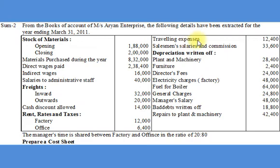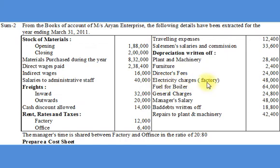Travelling Expenses Rs. 12,400; Salesman's Salaries and Commission Rs. 33,600; Depreciation on Plant and Machinery Rs. 28,400; Furniture Rs. 2,400; Director Fees Rs. 24,000; Electricity Charges Factory Rs. 48,000; Fuel for Boiler Rs. 64,000; General Charges Rs. 24,800.